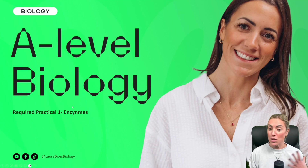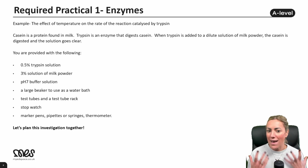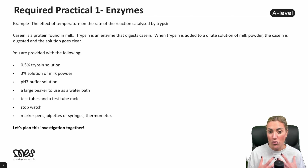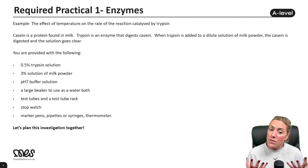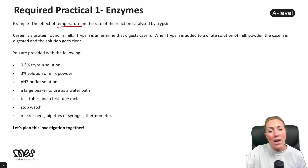For this video we are going to talk about required practical one, which is the enzyme practical. With this practical you basically need to investigate how a factor affects the rate of an enzyme controlled reaction. The factor you're probably going to investigate is temperature or pH. You could also investigate substrate concentration, enzyme concentration, or the addition of an enzyme inhibitor. The most common practical is the effect of temperature on an enzyme controlled reaction, and that's what we're going to look at today.